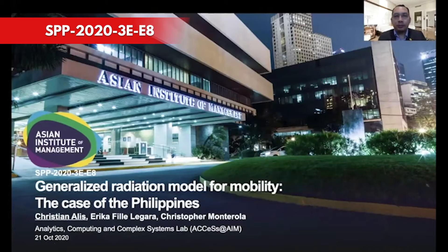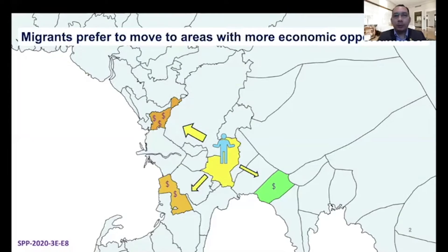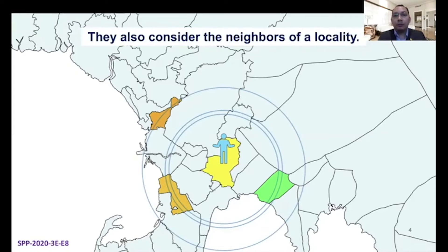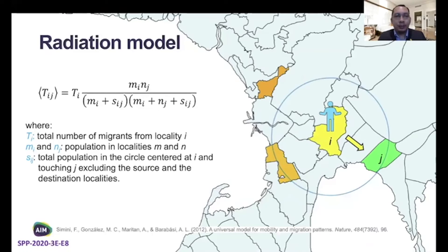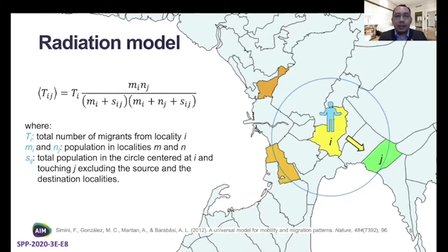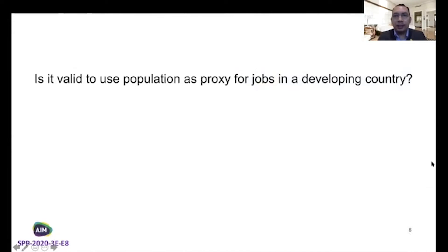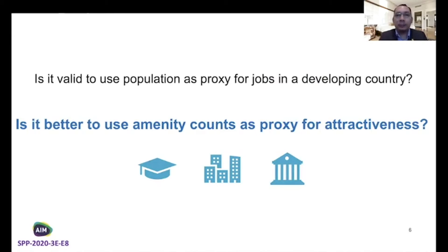The gravity model is one of the more important models for human mobility. It basically says that a migrant prefers to move to areas with more economic opportunities, but they prefer to move somewhere closer to where they are. They also look at the neighbors of a locality before they move into that locality. And all of this can be summarized by this equation. If you look at this, there's nothing here that says anything about economic opportunities or jobs. Rather, you only see population. In the original paper, they use population as the proxy for jobs, which leads us to the question, is it valid to use population as proxy for jobs in a developing country like the Philippines, where there's a huge socioeconomic inequality? Can we use amenity counts? That is the number of schools, number of offices, number of government buildings in a locality as a proxy for attractiveness?